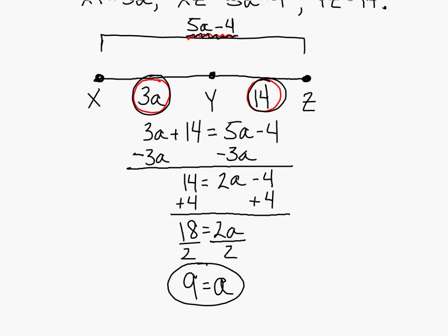Then they asked you to find XY. XY equals... XY is equal to 3 times A. Well, A is 9. So what's 3 times 9? 27. 27. There's the second part of your answer. A is equal to 9 and XY is equal to 27.